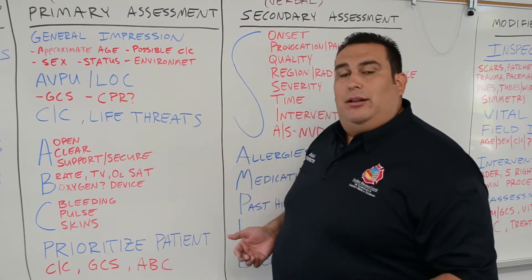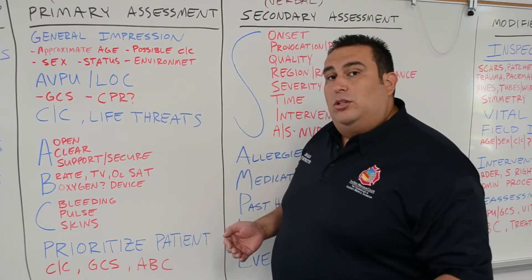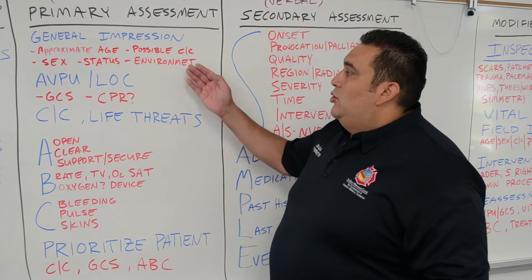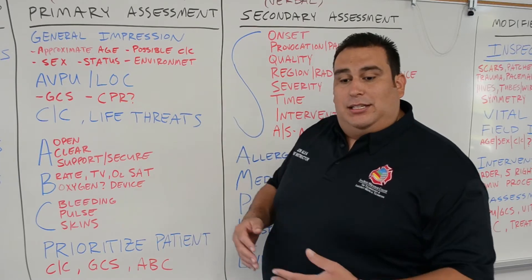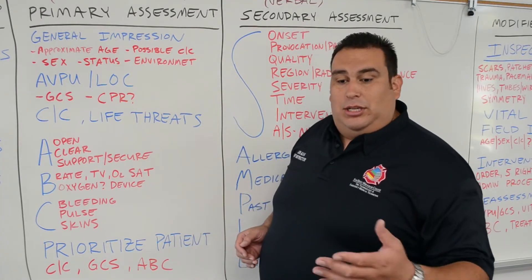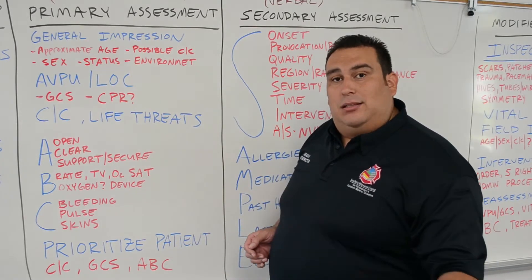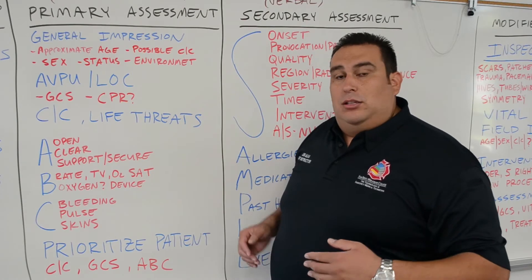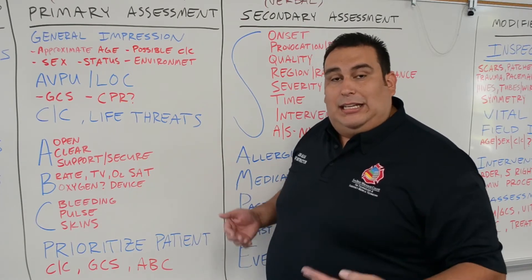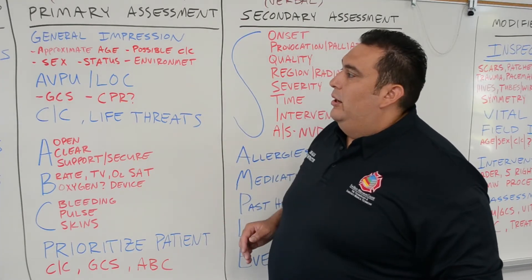Look for any background information — for example, if I walk into a bedroom, do I see any diabetes-related materials such as a glucometer, a sharps container, or insulin bottles? Do I see anything that can lead me to suspect what's going on?